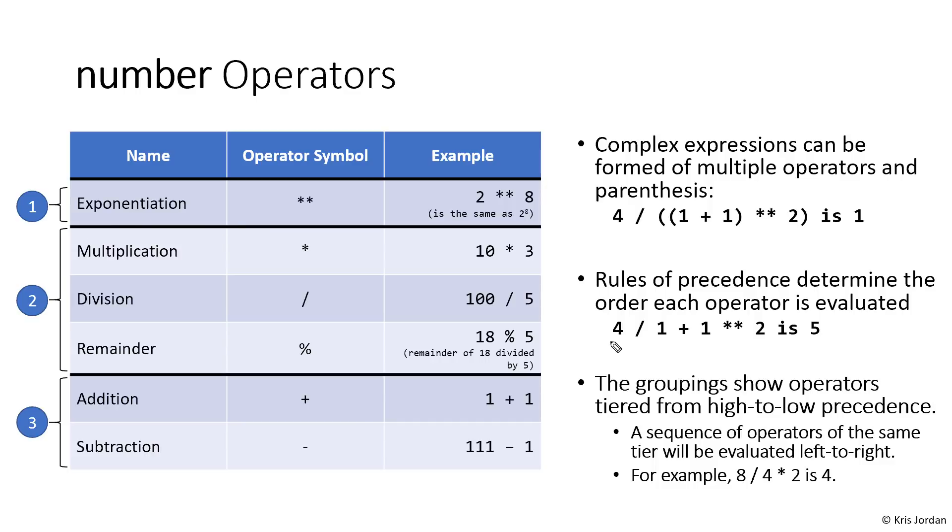This table gives us three tiers of precedence. The first thing the computer is going to do is look for exponentiation. Once we're done with exponentiation, we're going to look for multiplication, division, and remainder. Those are the second tier. The third tier is addition or subtraction. This follows a lot like PEMDAS, with parentheses at the top tier above exponentiation.